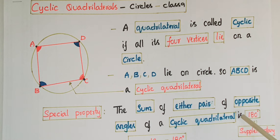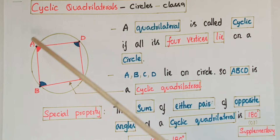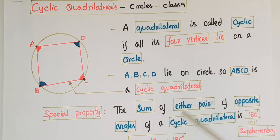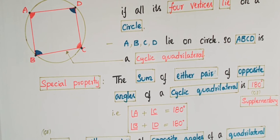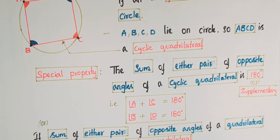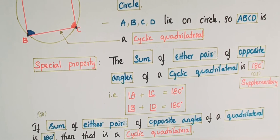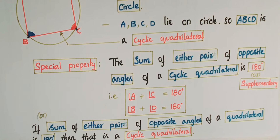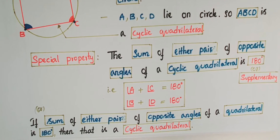A cyclic quadrilateral has a special property: the sum of either pair of opposite angles of a cyclic quadrilateral is 180 degrees, or supplementary. That means angle A plus angle C is equal to 180 degrees, and angle B plus angle D is equal to 180 degrees. We can also say that if the sum of either pair of opposite angles of a quadrilateral is 180, then that is a cyclic quadrilateral.